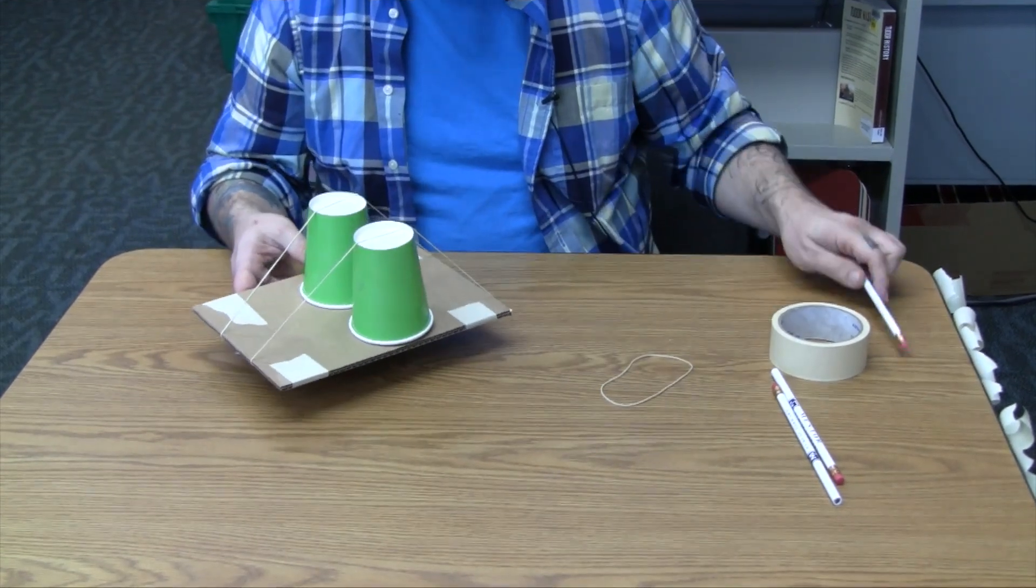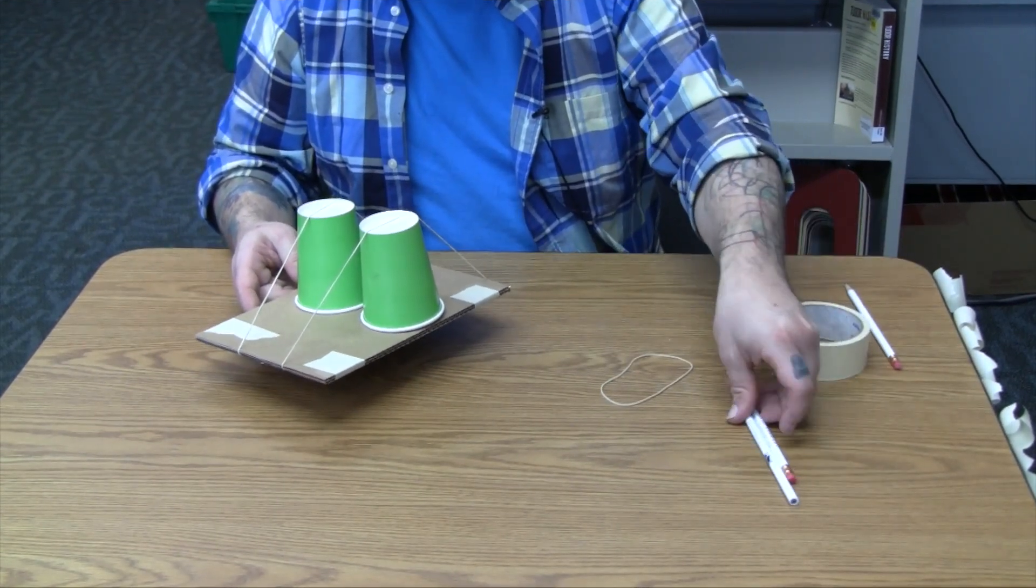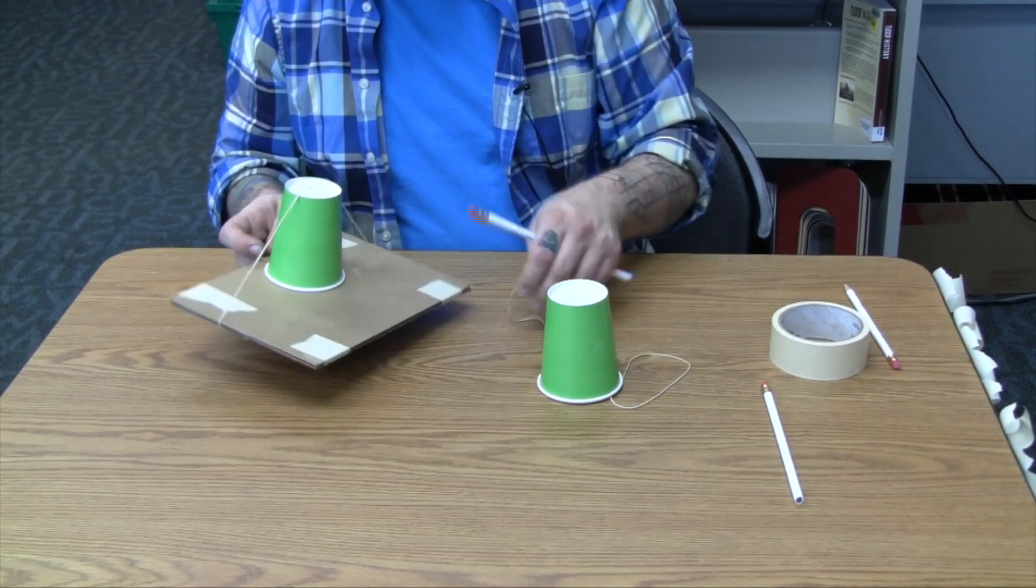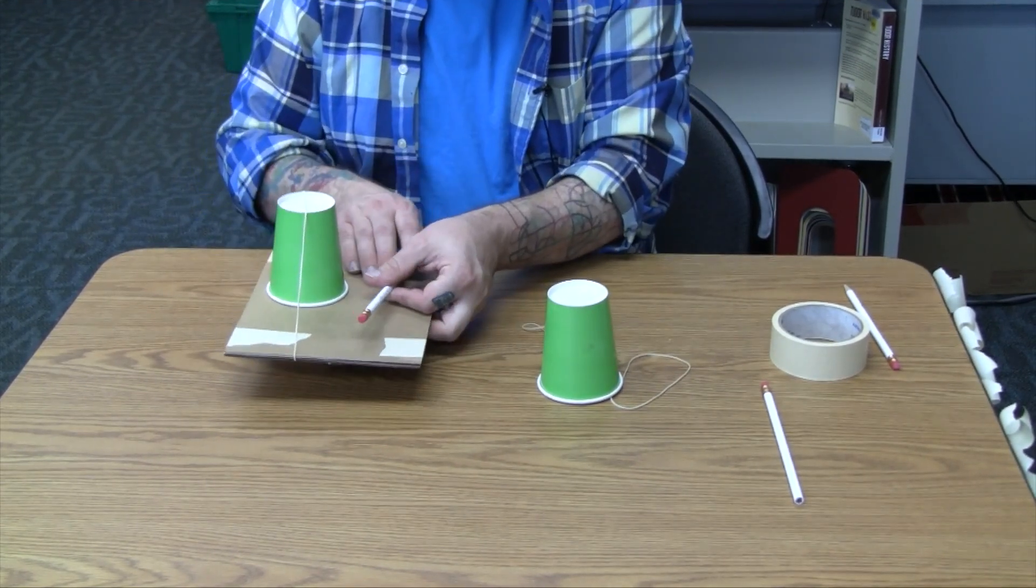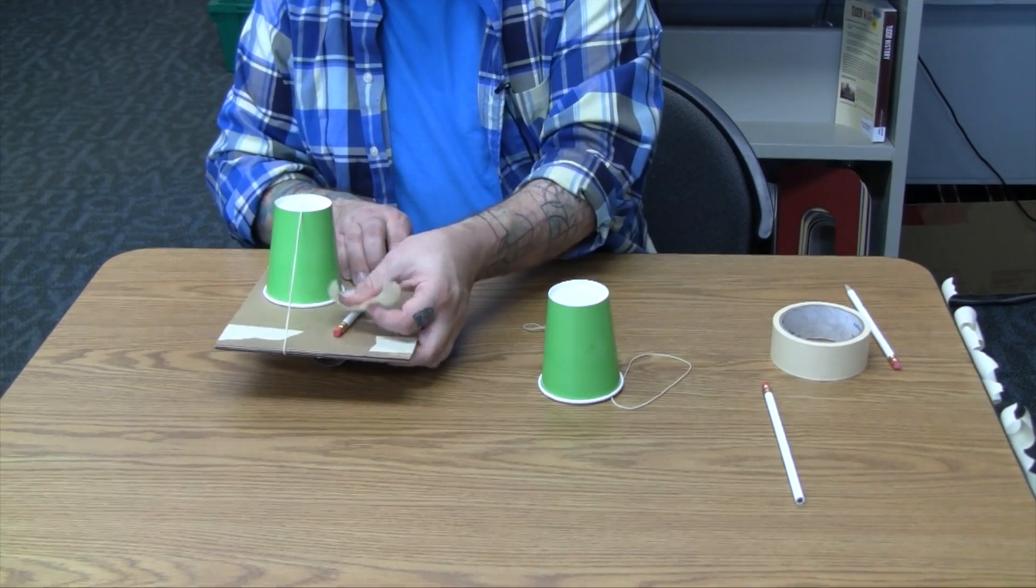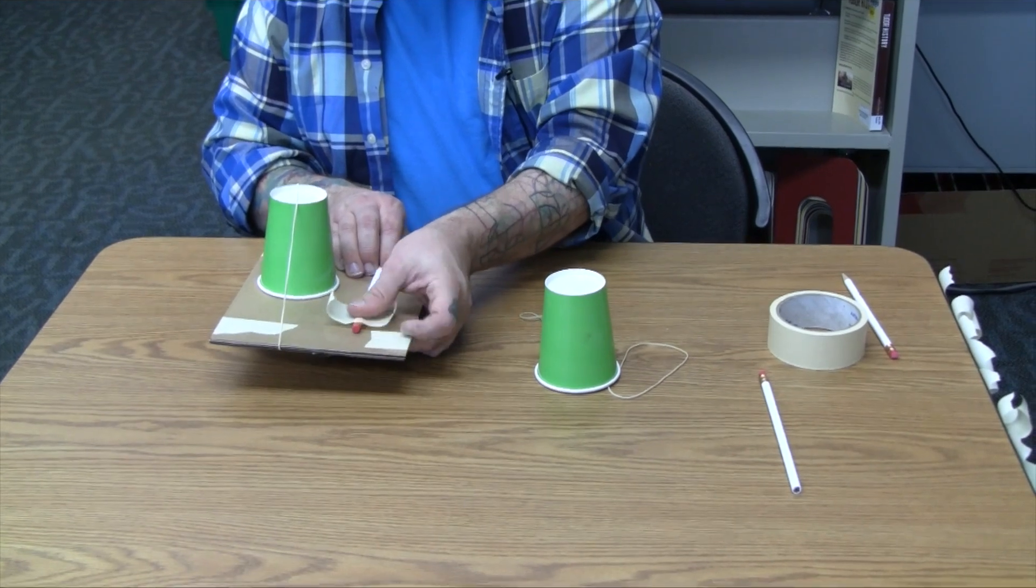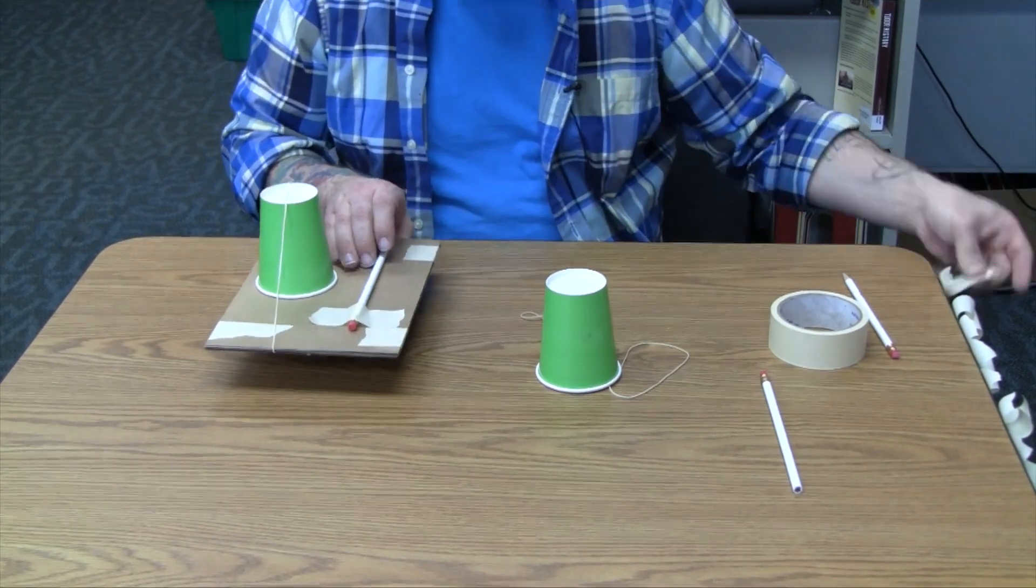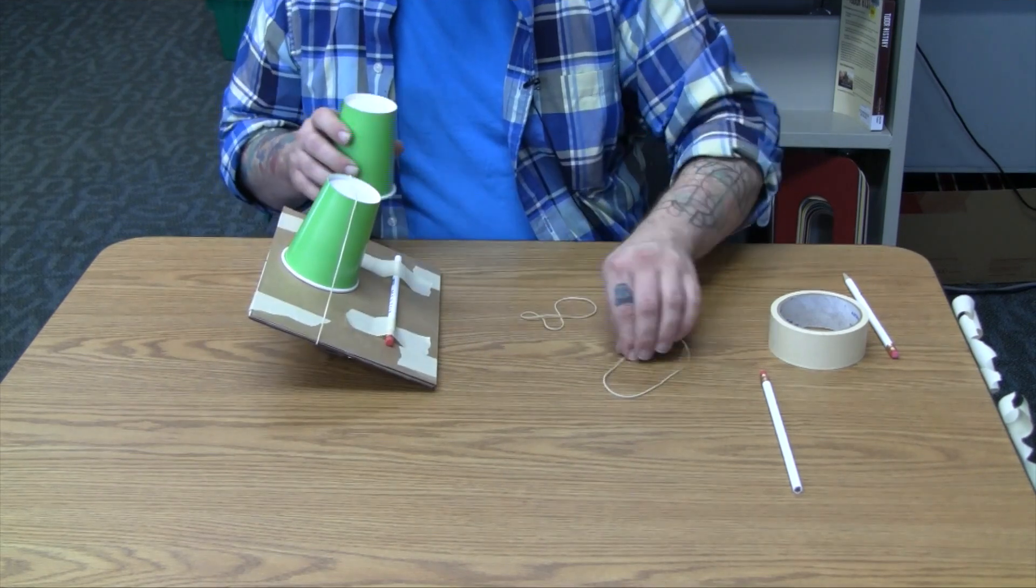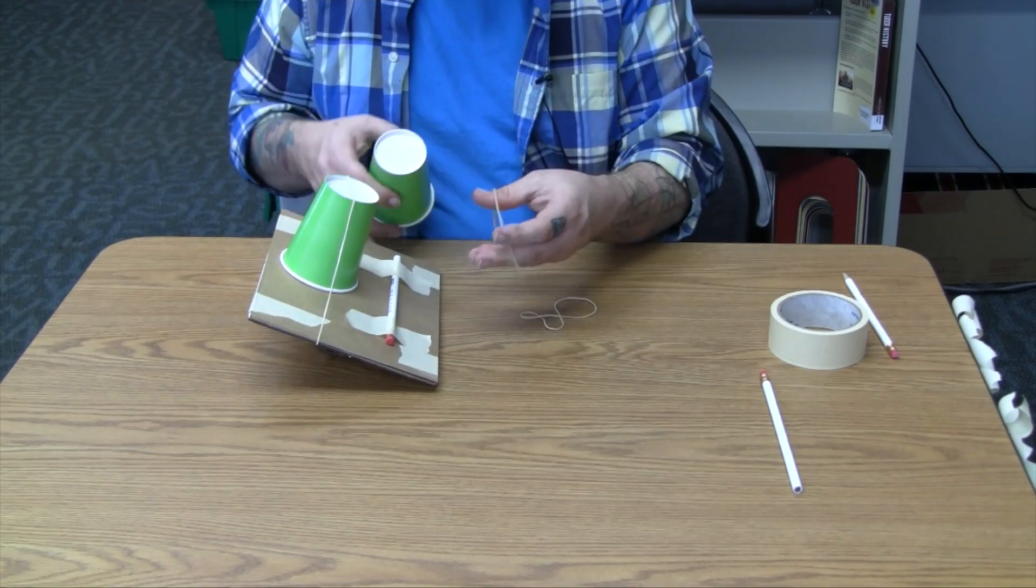And then also, like I said with the pencils here, what you can do if you wanted to, let's take these off and do this. Just the one side. Tape these down on top of your board. And then re-apply your cup and rubber band.